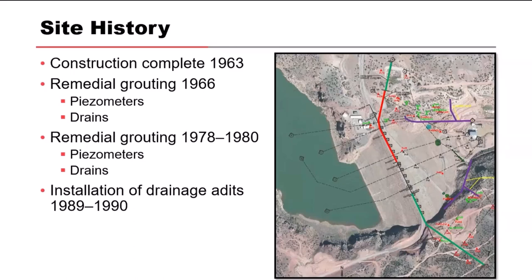Both of these included installation of piezometers and drains. Then in 1989, they constructed drainage adits, shown in purple, in both of the abutments.